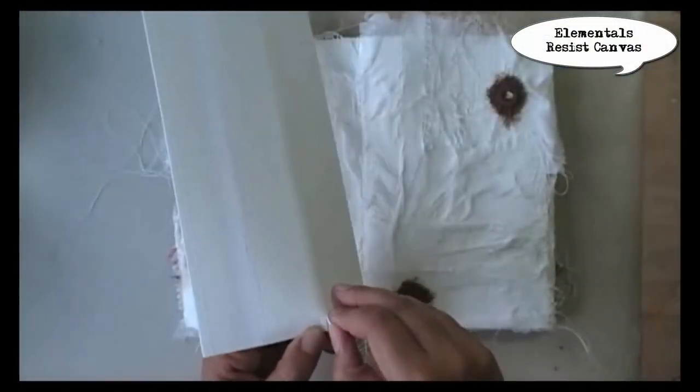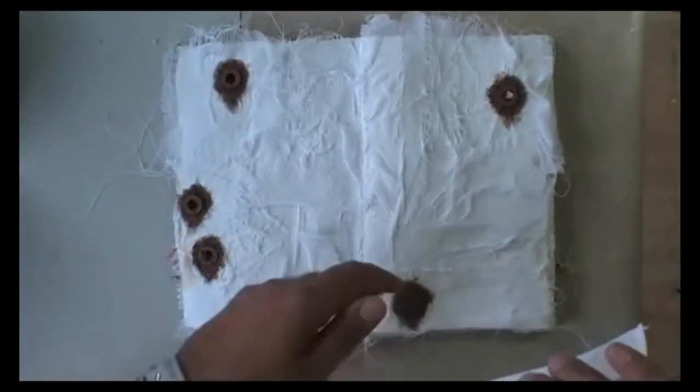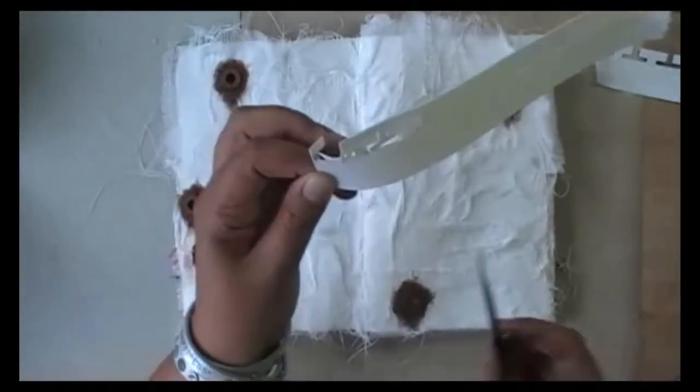The next element I want to use is some resist canvas. And this is just a border, which again, I will distress to make it work with the rest of my paper.